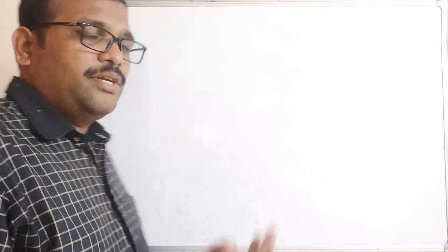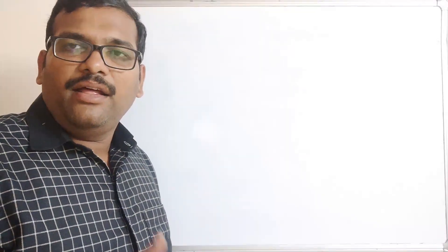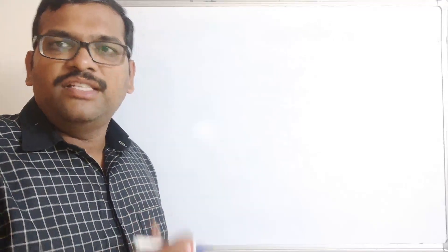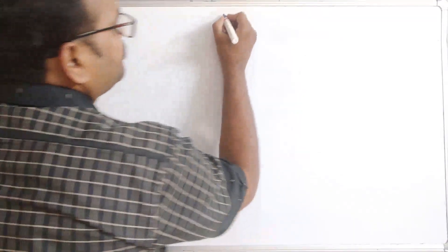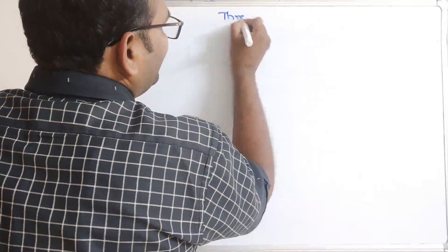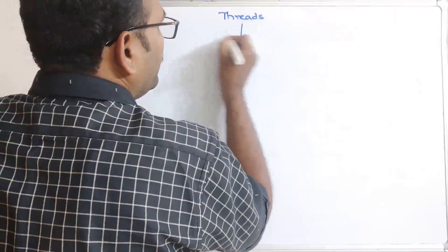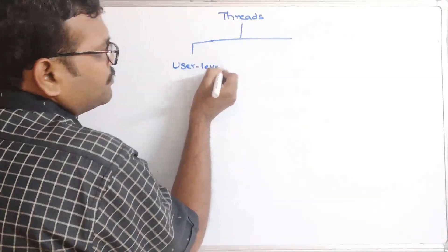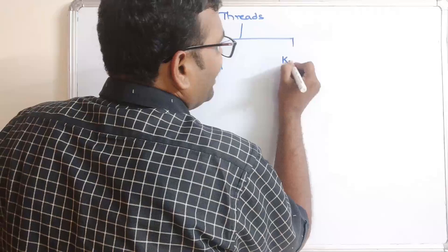Hello friends, welcome back to our channel. In today's session we'll discuss one more concept in operating systems — types of threads. In our previous session we discussed what a thread is and the difference between a thread and a process. Now we'll see the different types of threads. Threads are classified into two categories: user-level threads and kernel-level threads.